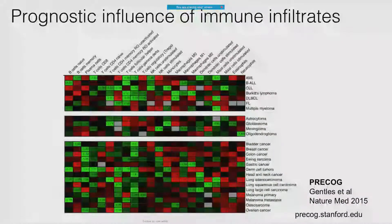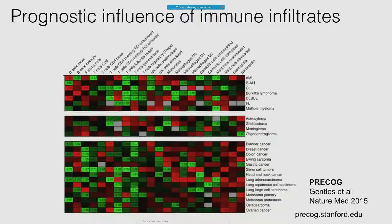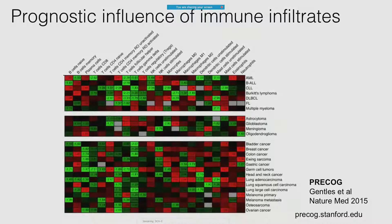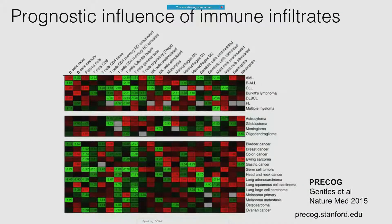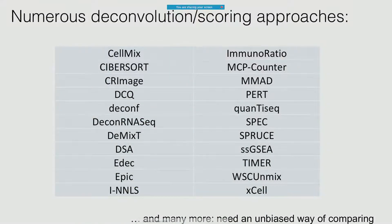The way we used CIBERSORTx was to deconvolve a bunch of public array data sets. We developed a resource called PRECOG where we collected all public cancer gene expression studies with clinical outcomes. We applied CIBERSORTx to find the relative proportion of different immune cell types across those samples, and then associated that with clinical outcome for patients. Looking at 22 different immune cell types across a bunch of different tumor types, green corresponds to where high infiltration levels correspond with longer survival outcomes, and red corresponds with shorter outcomes.